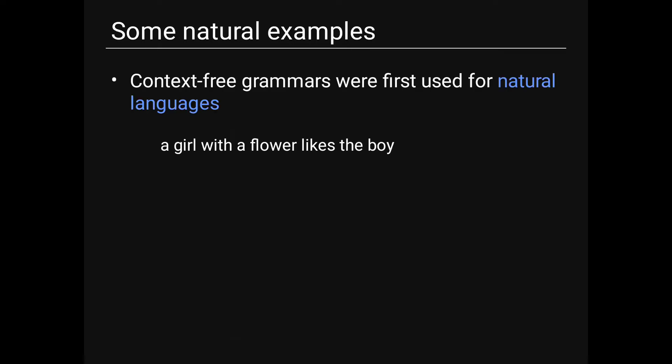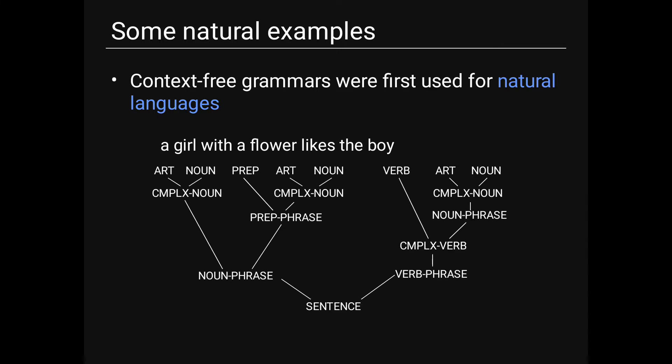Context-free grammars were first used for natural languages. For the sentence 'a girl with a flower likes the boy': 'a' is an article, 'girl' is a noun, 'with' is a preposition, 'a' is an article, 'flower' is a noun, 'likes' is a verb, 'the' is an article, and 'boy' is a noun. Combining these gives a complex noun phrase, then a prepositional phrase, noun phrase, complex verb phrase, and finally the full sentence.